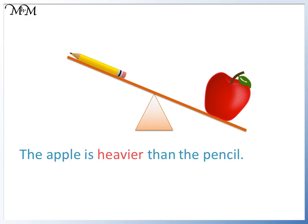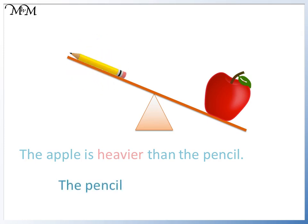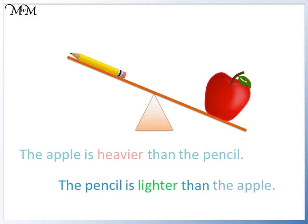We have compared the weights of these two objects. The apple has pushed down on the scale more than the pencil. Another way to say this is the pencil is lighter than the apple. Lighter is the opposite of heavier.